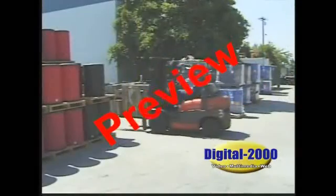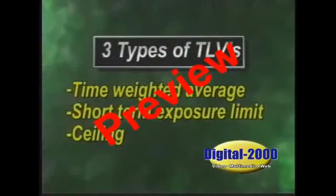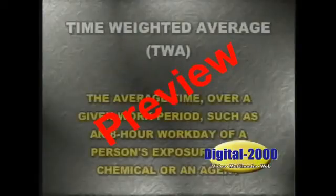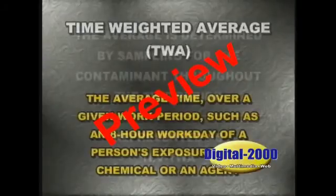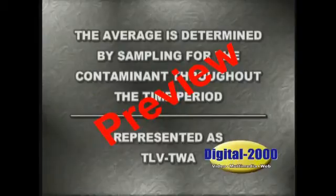There are three different types of TLVs: time-weighted average (TLV-TWA), short-term exposure limit (TLV-STEL), and ceiling (TLV-C). Time-weighted average, TWA, is the average time over a given work period such as an 8-hour workday of a person's exposure to a chemical or an agent. The average is determined by sampling for the contaminant throughout the time period, represented as TLV-TWA.